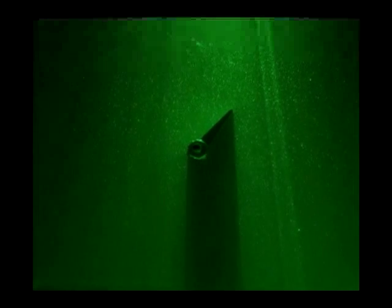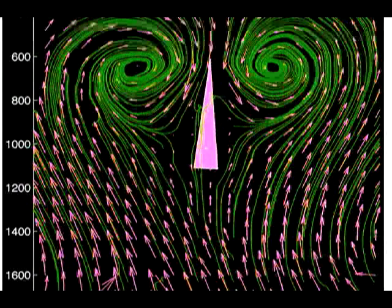Particle image velocimetry is a method where many neutrally buoyant particles are randomly distributed into the fluid. A laser sheet illuminates one section of the experiment to be picked up by a camera. A computer tracks the motion of the particles and the entire velocity field of that section can be determined. Here, the fluid motion around a flapping fin is analyzed.